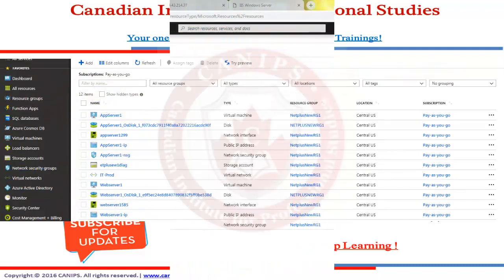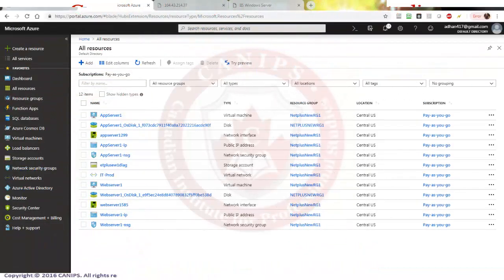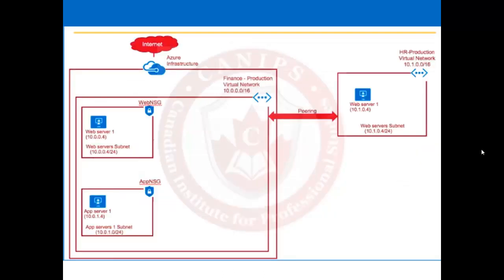Hello everyone. In this video I'm going to show you how to work with vNet peering. vNet peering is a concept in which we can connect two virtual networks together that are sitting in two different regions, or actually within the same region, we can use vNet peering in order to connect the networks.